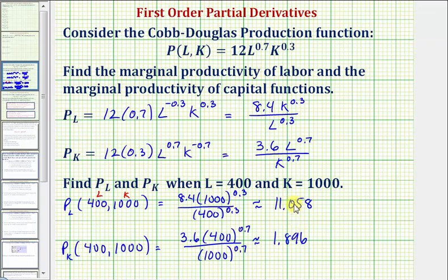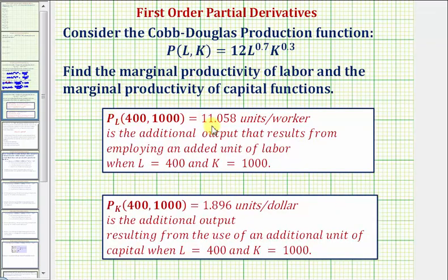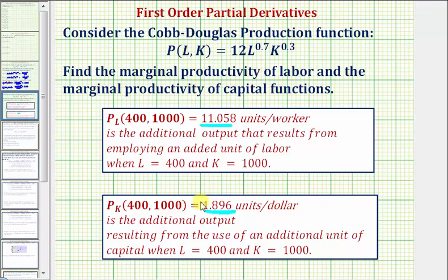Let's emphasize what these two values represent. The value from the partial with respect to L is the additional output that results from employing an additional unit of labor when L equals 400 and K equals 1,000. At this point, production is increasing at approximately 11 units per worker. The partial with respect to K represents the additional output resulting from the use of an additional unit of capital when L equals 400 and K equals 1,000 — with units of production per dollar.